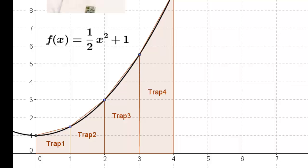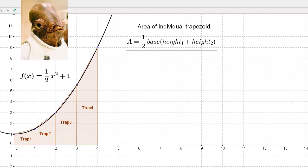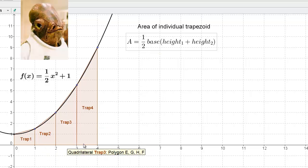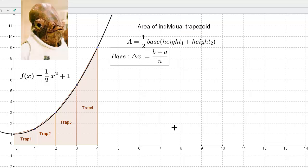We've got to go back to a little bit of geometry to get the area of an individual trapezoid. For a trapezoid, it's one half of the base, which is the width of the trapezoid, times the heights added together, because it's like the average of the two heights. In this case, the base is delta x, which is (b - a)/n, the width of the single trapezoid.